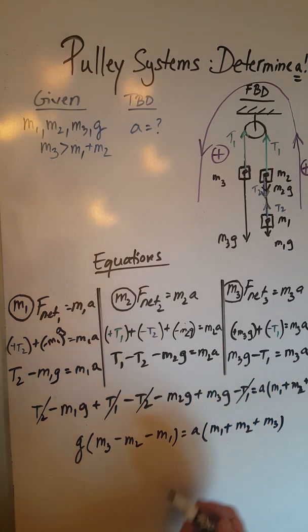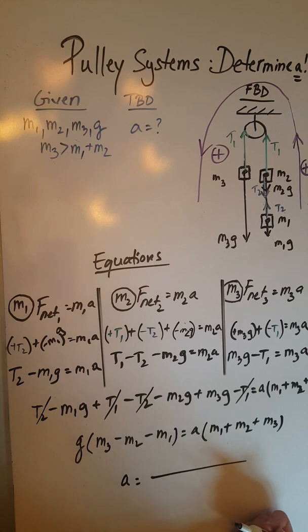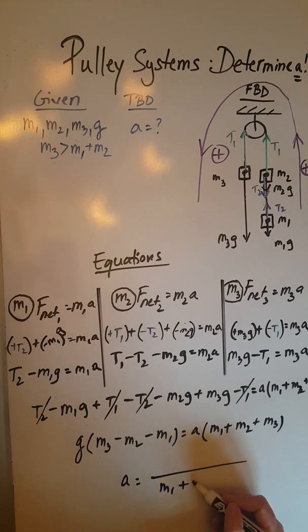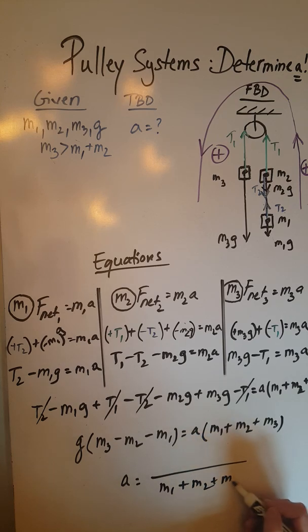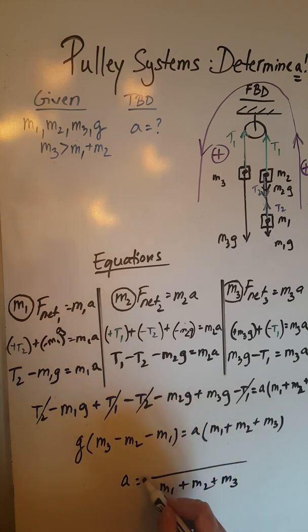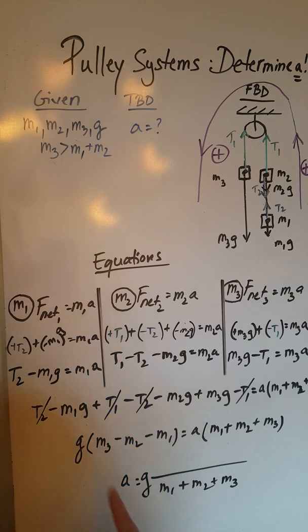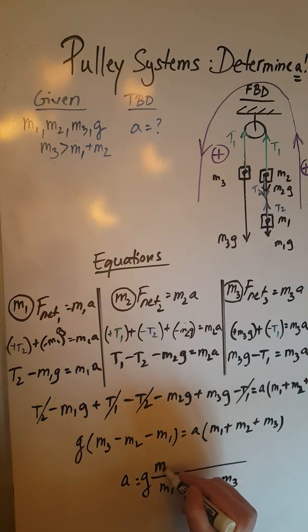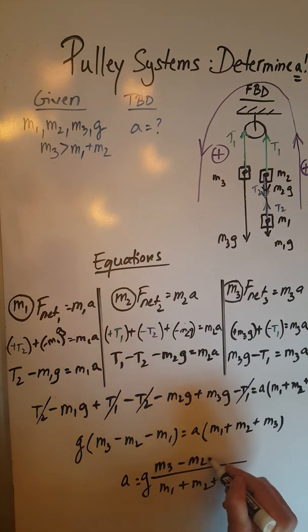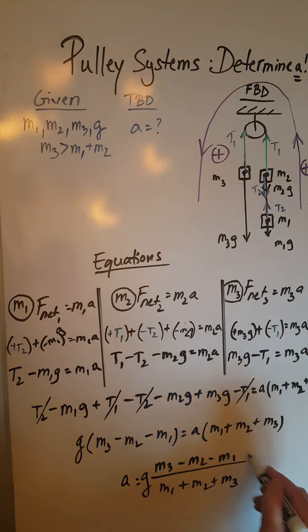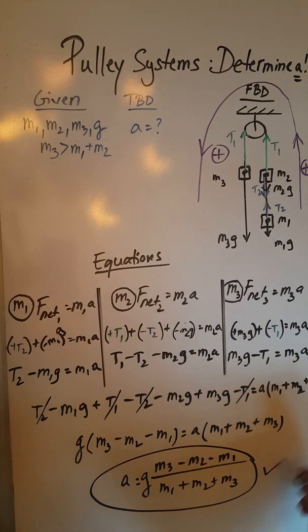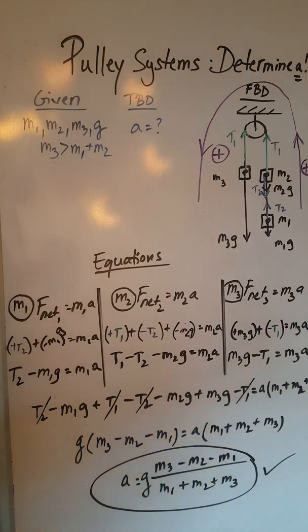And now by simply dividing both sides by the sum of masses, we end up having our TBD finalized here. M1 plus M2 plus M3 goes in the bottom of my fraction, G in the front of the whole fraction, and in the top I'm going to have M3 minus M2 minus M1. Circle—and that is our final answer for this second case of pulley systems. Thank you.